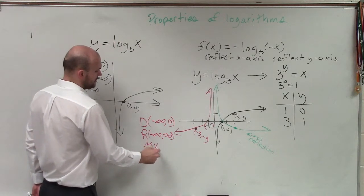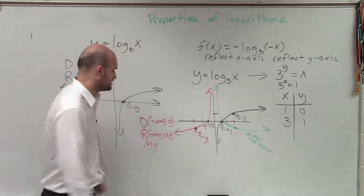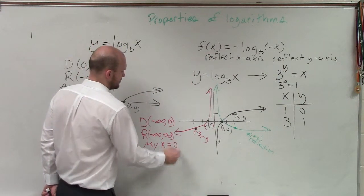The range is going to cover all of them. And my asymptote, since I didn't shift anything, my asymptote is still going to remain at x equals 0.